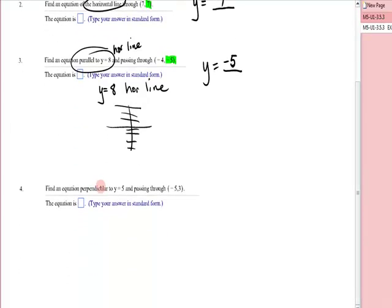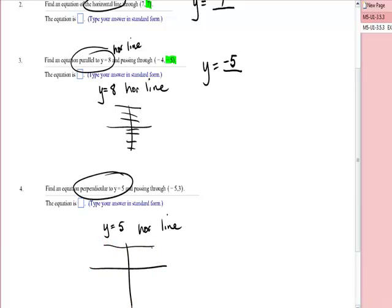The last one says perpendicular to y equals 5. Well, let's see where we start. y equals 5 is a horizontal line cutting through the y-axis at 5. If you're perpendicular to that, then you are a vertical line. This was a rather sneaky way of saying vertical line. So this is a vertical line. So it's an x equals, and what is the x-coordinate? It is negative 5.